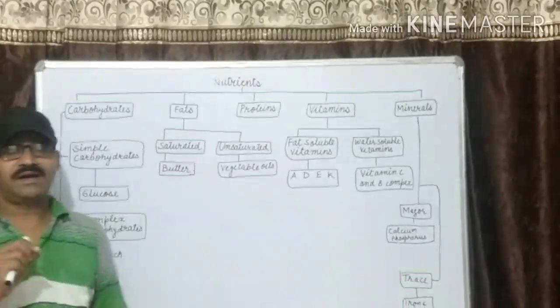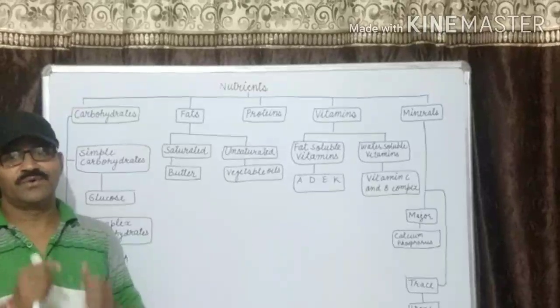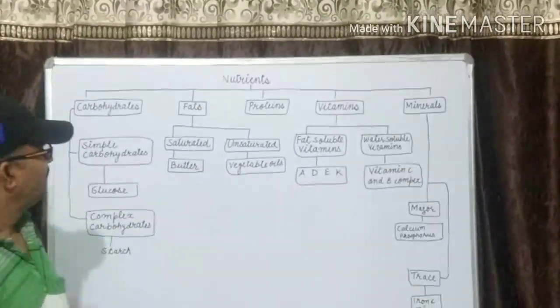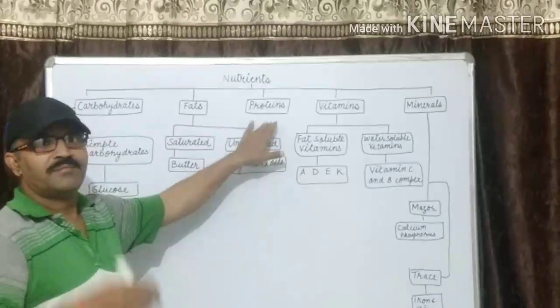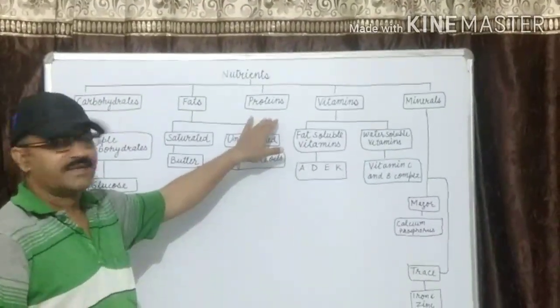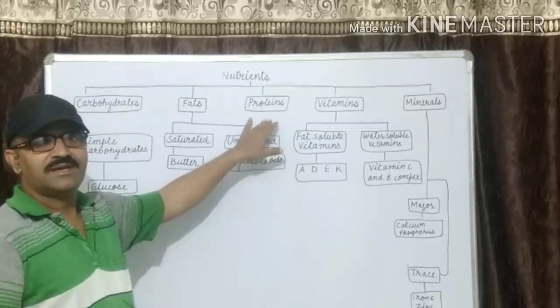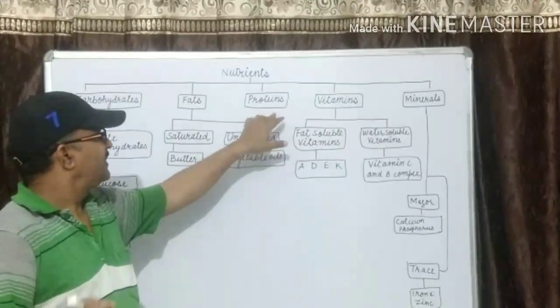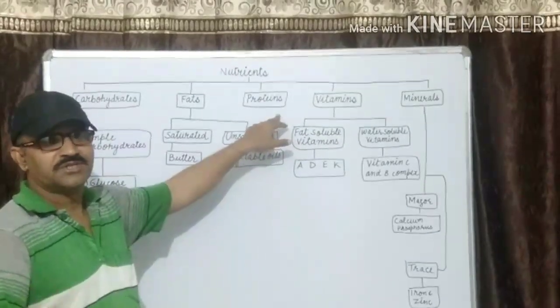Third is protein. Proteins are needed by our body for muscle building and repairing bone and tissues. We get protein from plants as well as animals. Plant proteins: pulses. Animal proteins: meat, fish.